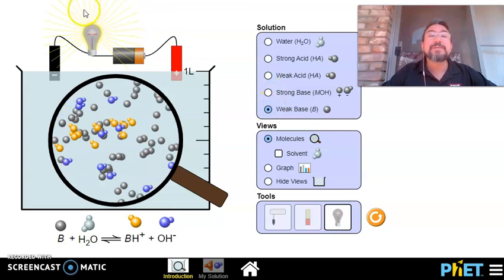Same for a weak base. A weak base doesn't conduct electricity well. Why? Because most of the original base is there. Only you see a few of those ions present because it partially ionizes. Weak acids and weak bases only partially ionize. They partially dissociate into the two ions.